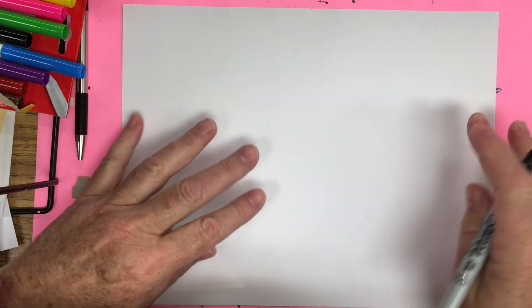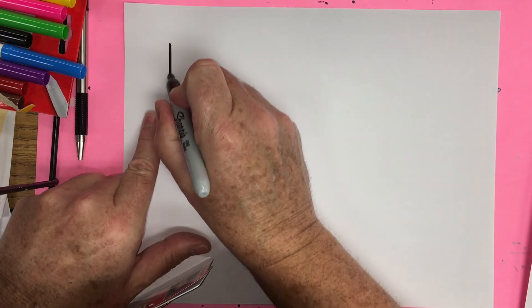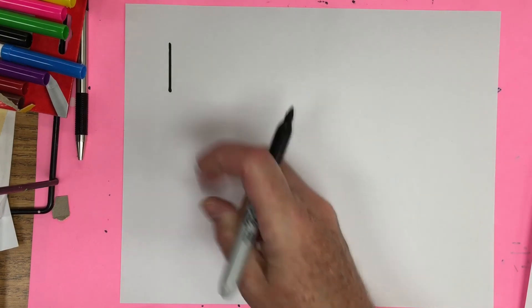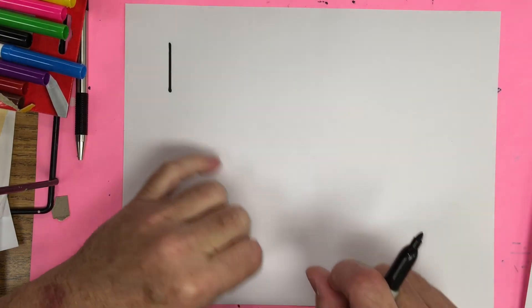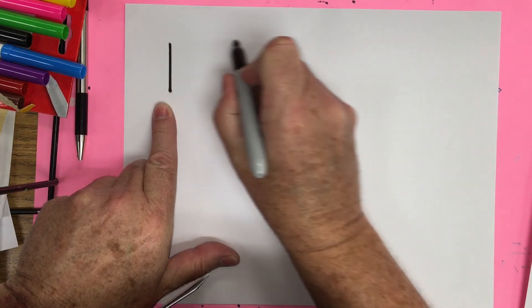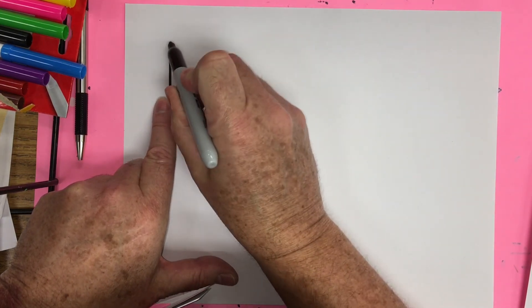Our first shape is going to be a square. So we're going to draw a straight line down and this is up in this left-hand corner because we're going to fill our page with fun shapes.